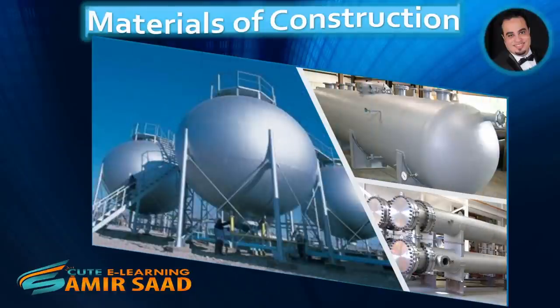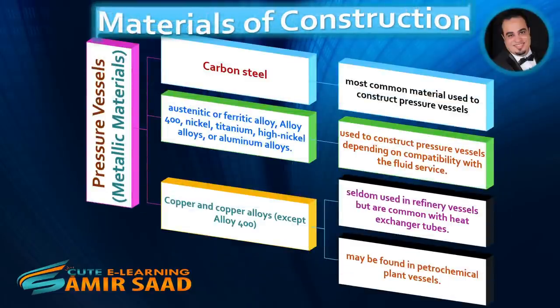We will discuss and focus on the materials used to construct pressure vessels and heat exchangers. Pressure vessels constructed out of metallic materials are made from: first, carbon steel, which is the most common material used; second, austenitic or ferritic alloy, Alloy 400, nickel, titanium, high nickel alloys, or aluminum alloys, depending on compatibility with the fluid service.